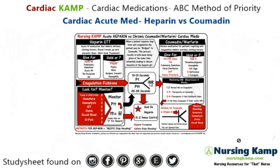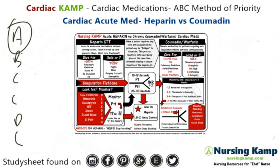Let's talk about heparin first. Heparin is an acute medication. It's part of the cardiac ABCs and what I'm talking about is it's part of the 'H' in hands only, and heparin is acute because it's given for patients who are at risk for clots.